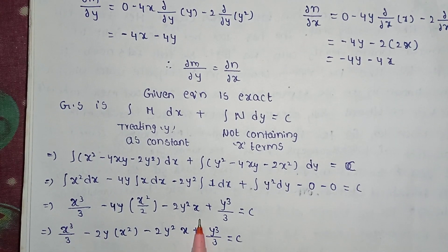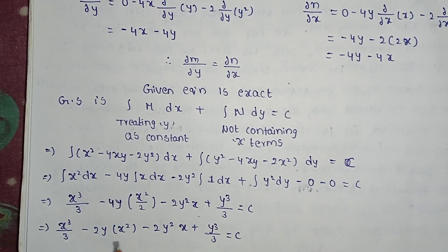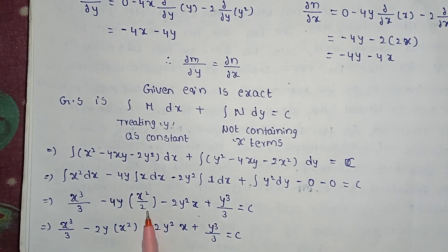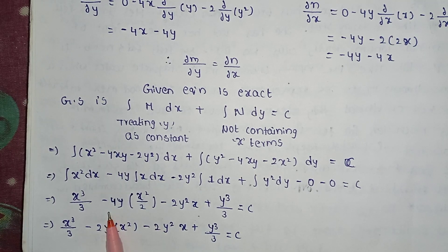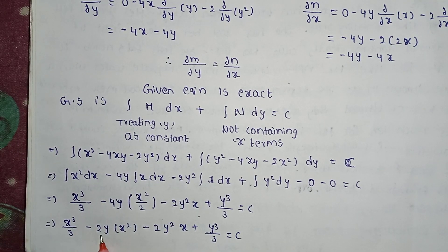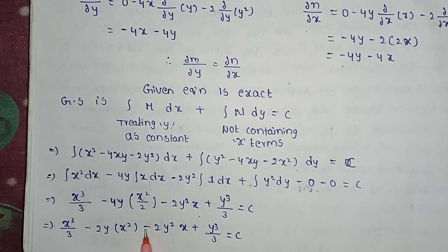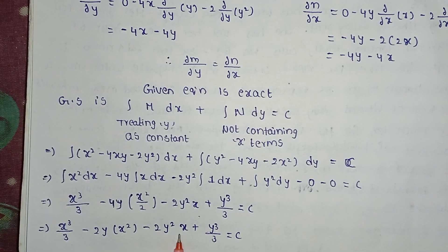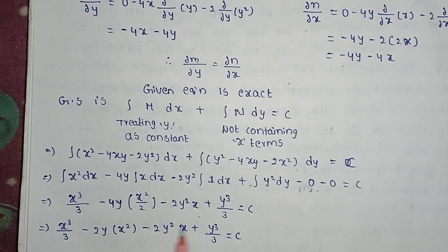This gives x³/3 - 2x²y - 2xy² + y³/3 equals c. This is the general solution.